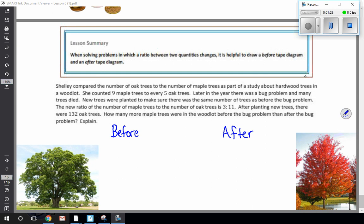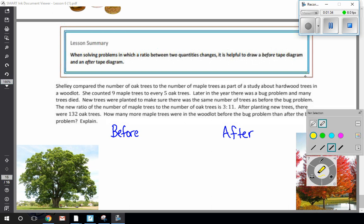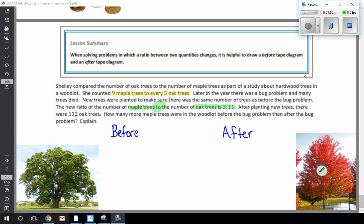So again I'm going to start thinking about my different parts. I've got my before and I have my after. So before I had nine maple and five oak trees as my ratio. And then it talked about later they planted the same number of trees, but the ratio of maple to oak is three to eleven. It was still maple to oak, so the ratio order remains the same. Then it says after planting new trees, so here's the after part. I'm going to highlight the after part in green. There were 132 oak trees. So I'm going to focus in on all that before coming back to answer the following question.